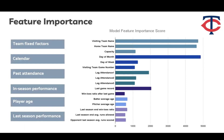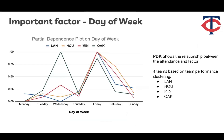The top features can be categorized into six groups: team fixed factors, calendar, past attendance, in-season performance, player age, and last-season performance. Beyond feature importance, we also examine the relationship between each feature and attendance using Partial Dependence Plots, which show the marginal effect a factor has on the predicted outcome. To compare effects across teams, we selected four teams — Los Angeles, Houston, Minnesota Twins, and Oakland — chosen based on clustering of game performance into four tiers, one team per cluster. The partial dependence values are rescaled to zero to one for cross-team comparison.